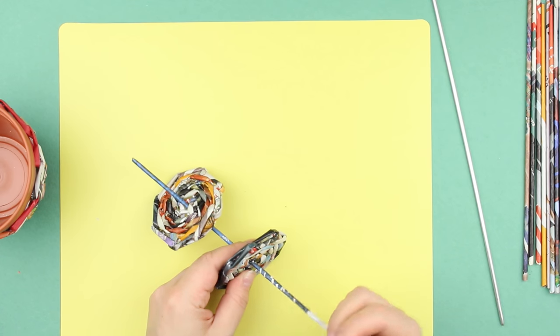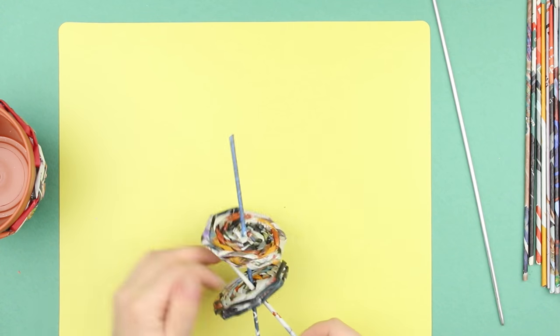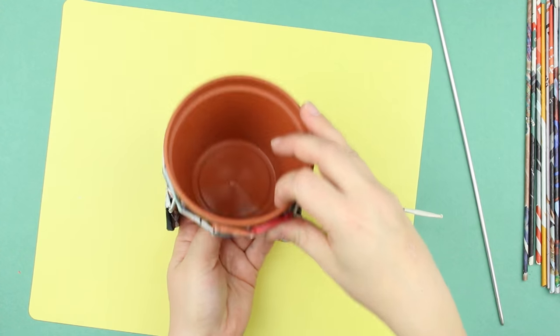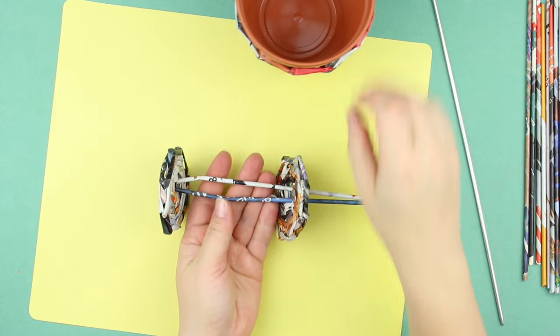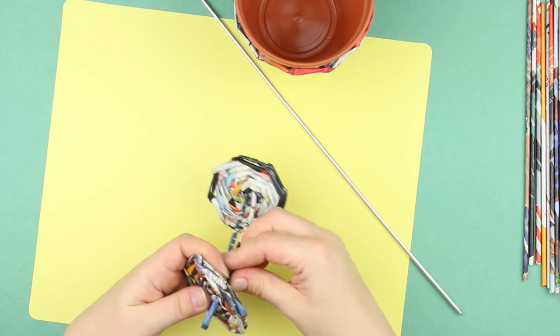Pass the folded in half tube into the center of the wheel to make a shaft. Put the pot on the shaft to measure the appropriate space between the wheels. Fasten the ends.